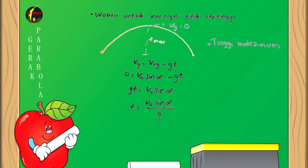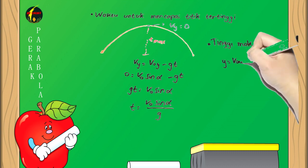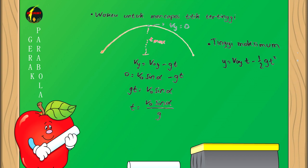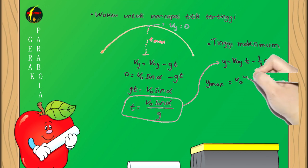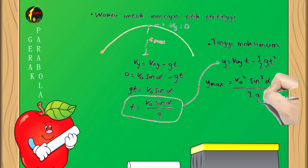Untuk mengetahui tinggi maksimum, dapat digunakan Y = V0Y × T - ½gT². Setelah substitusi dengan persamaan sebelumnya, diperoleh Ymax = V0² sin² α / 2g.